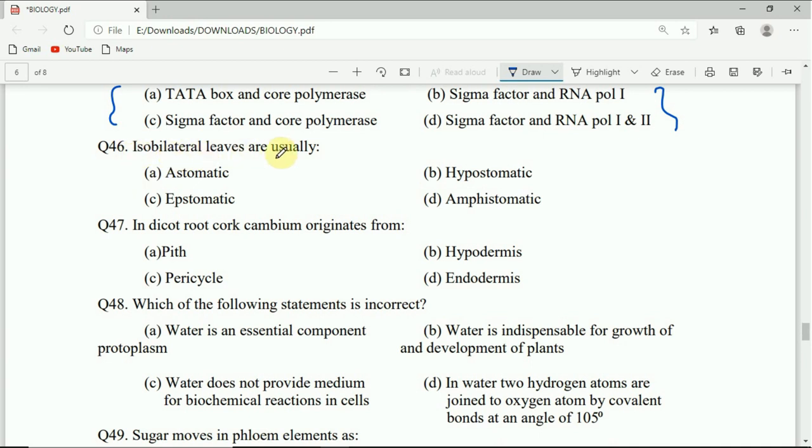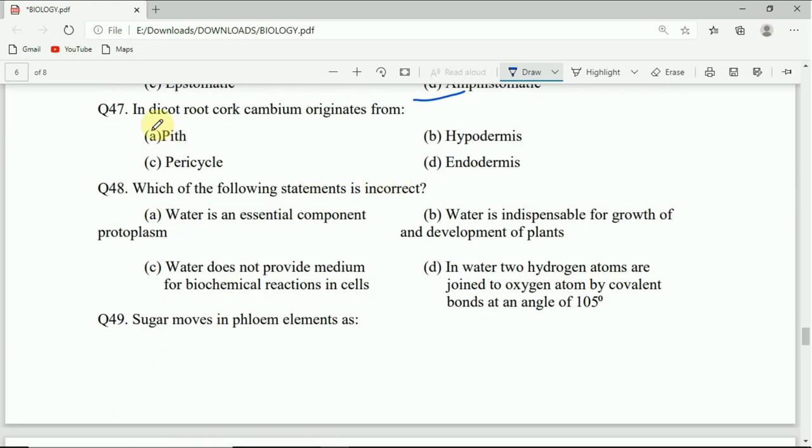Question 46: Isobilateral leaves are usually astomatous, hypostomatous, apostomatous, or amphistomatous. Correct answer is D, that is amphistomatous. Question 47: In dicot roots, cork cambium originates from pith, hypodermis, pericycle, or endodermis. Correct answer is pericycle.